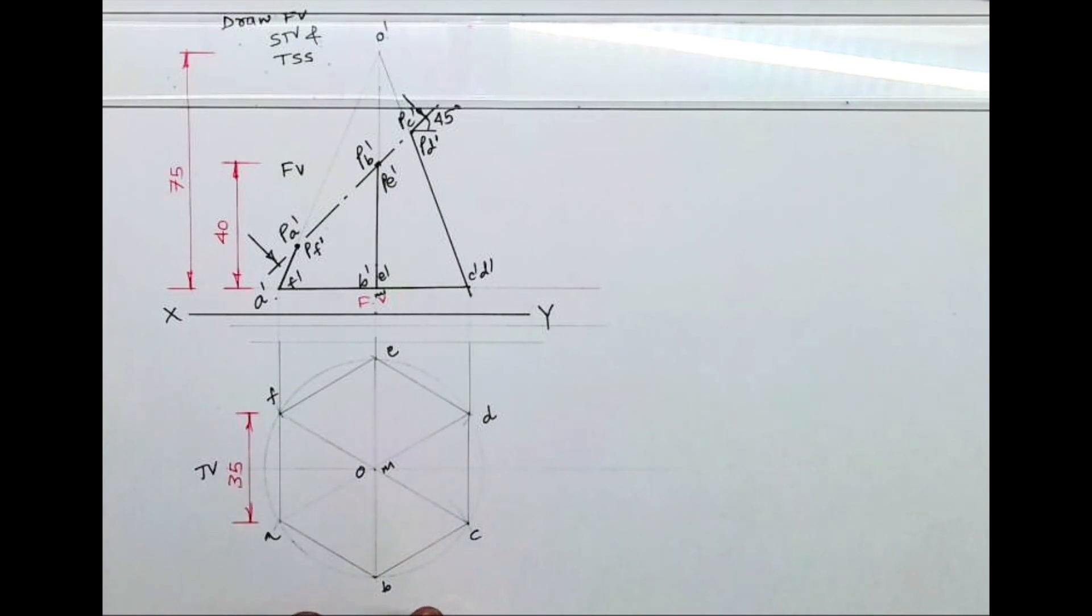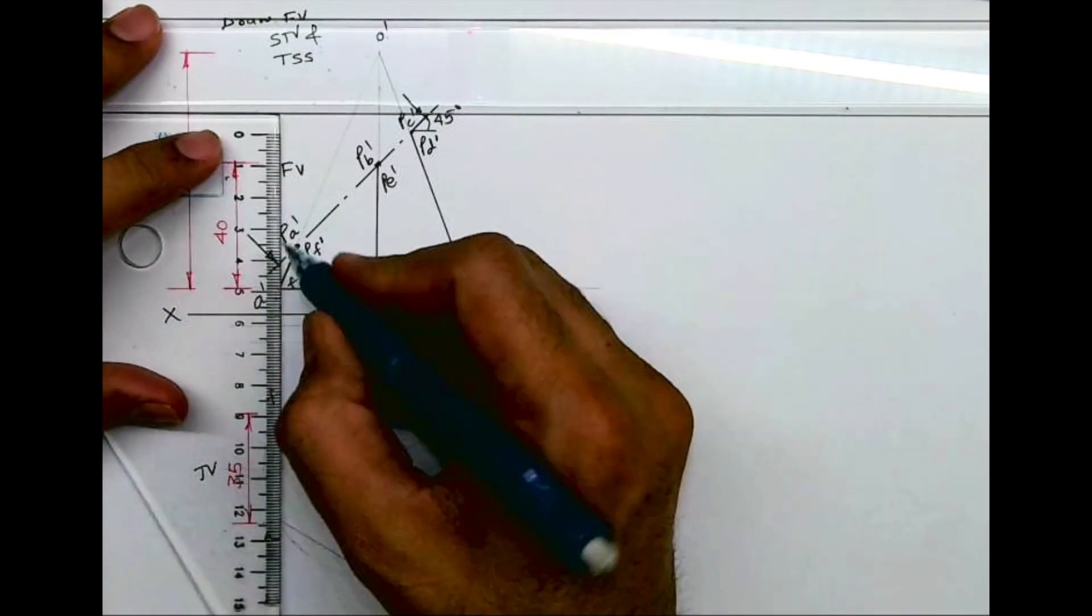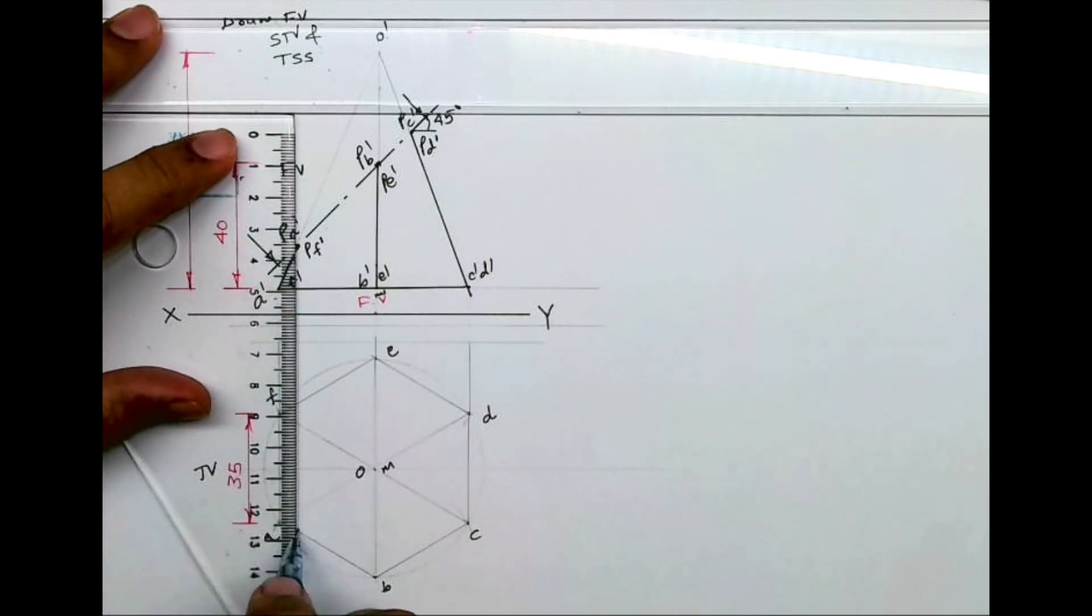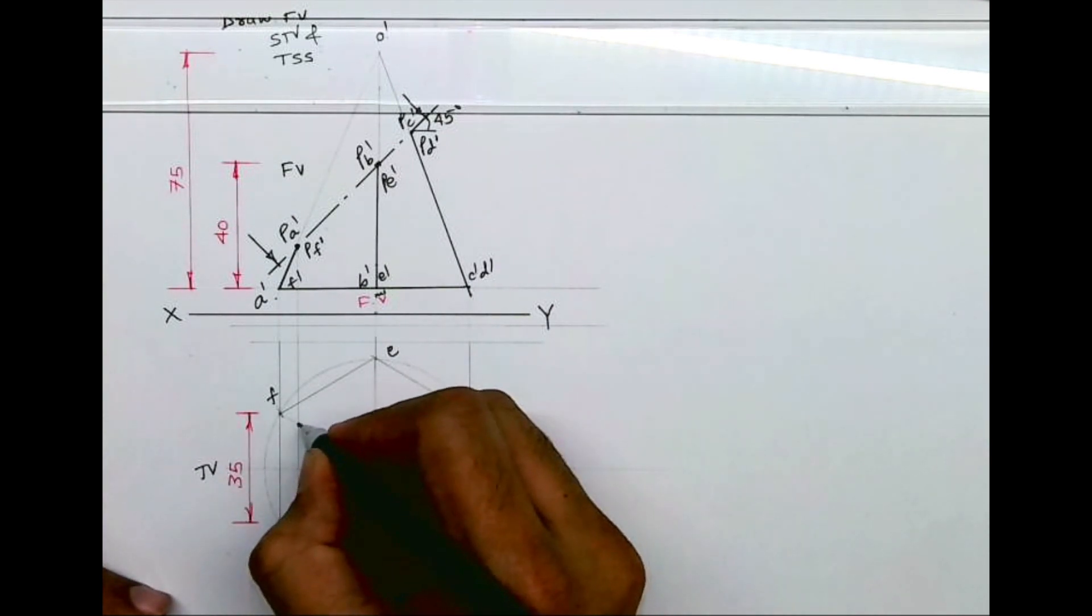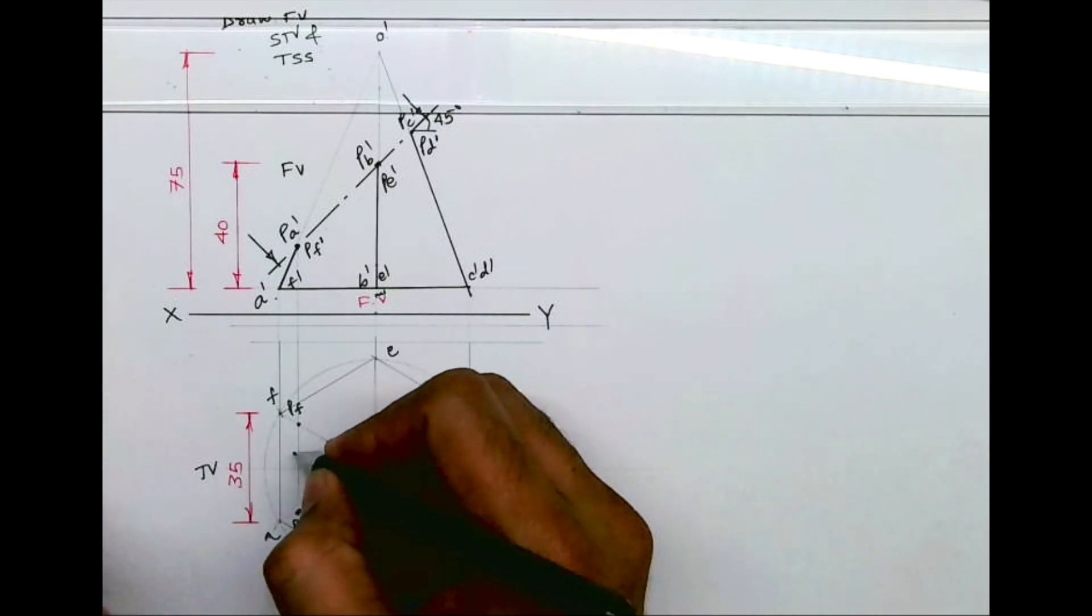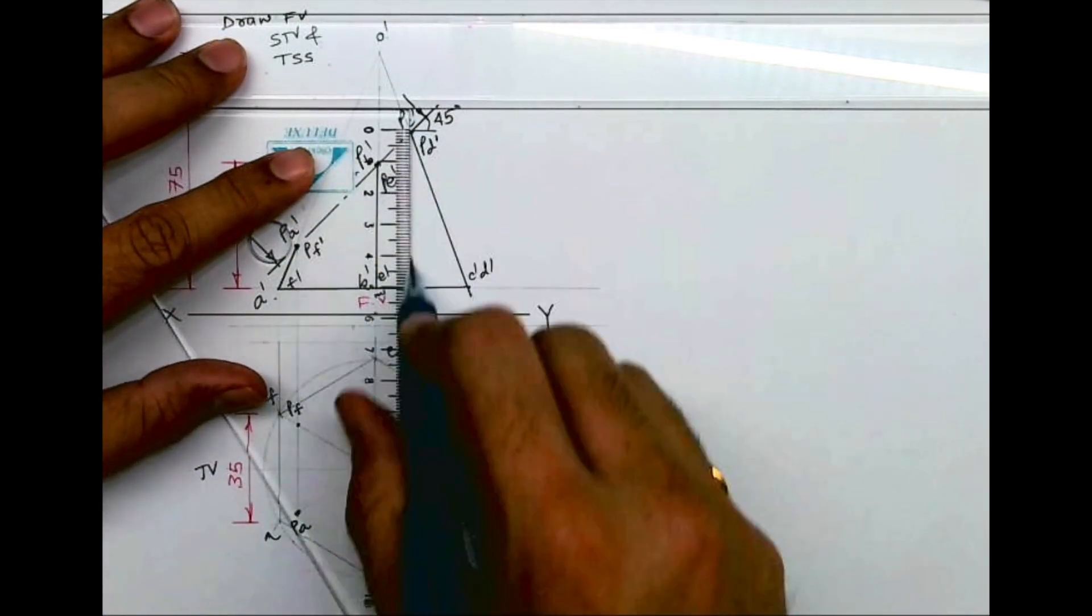Now we need to mark all these points down. I will project all these points down. Where do we mark the point? Wherever it is intersecting on OA and OF. So wherever it will cut on OA, that is PA. And on OF, that is PF. Same way, this point C and D.